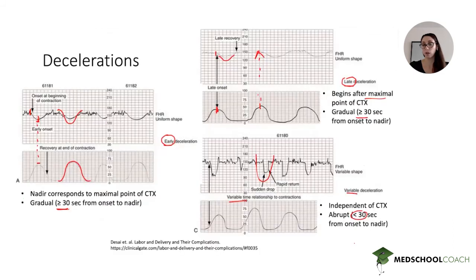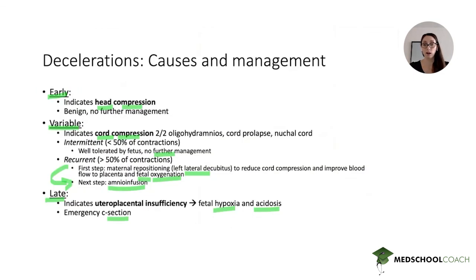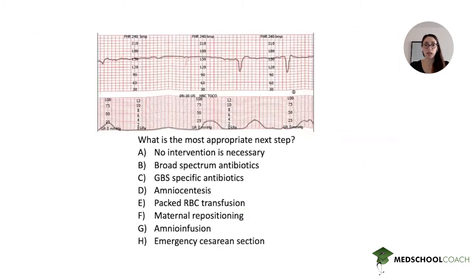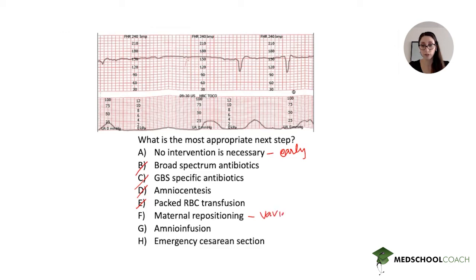Going back to our question, we've already crossed off choices B, C, D, and E, leaving: A (no intervention — correct for early or intermittent variable), F (maternal repositioning — for recurrent variables, first step), G (amnioinfusion — for recurrent variables, second step), and H (emergency C-section — for late decelerations). We now need to interpret the fetal heart tracing to pick the right answer.